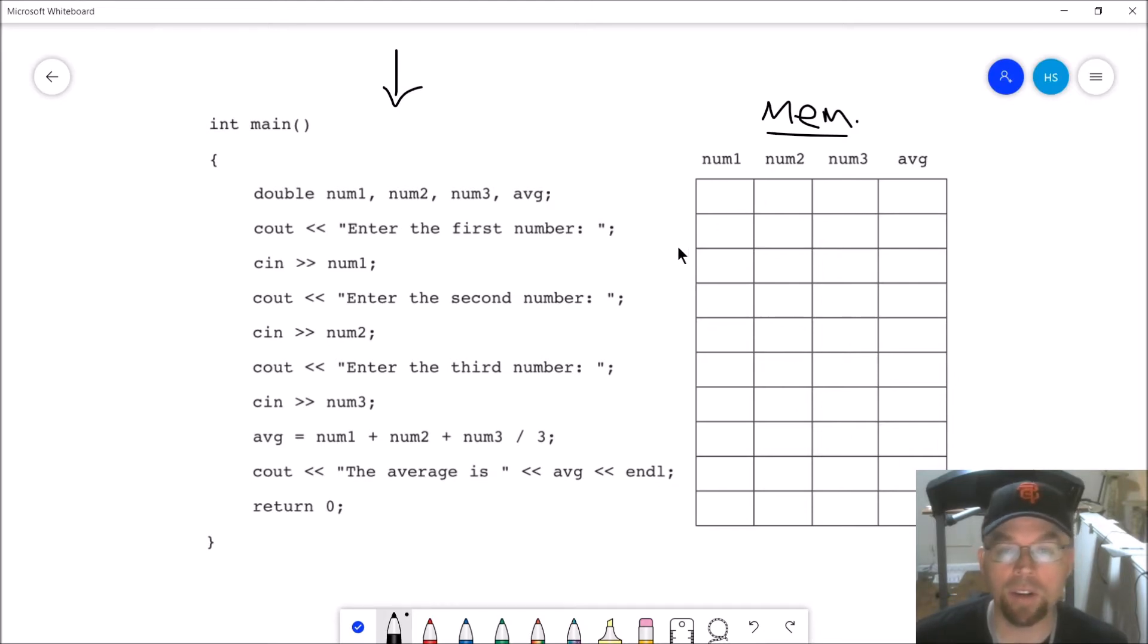My brain becomes the CPU, and this grid over here, or if it was just a little piece of paper or blackboard or whiteboard, that's where you're going to write your memory down. What you do is you go through and you read each line of code, and then you update your memory.